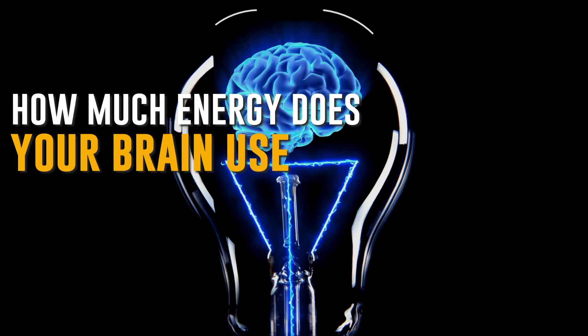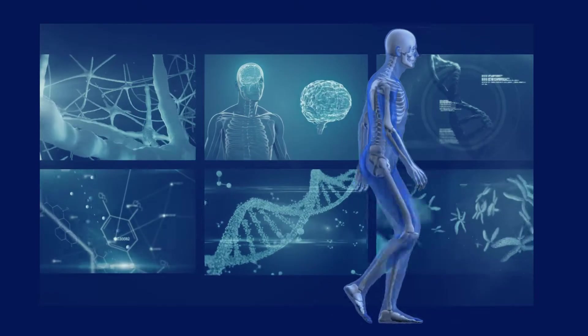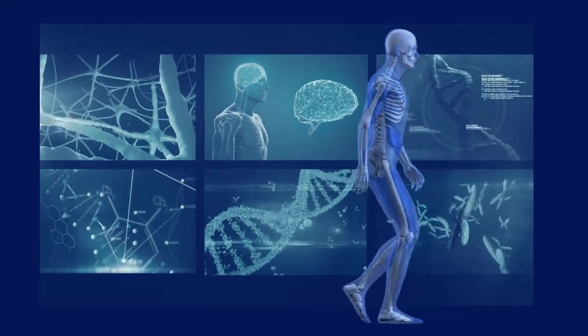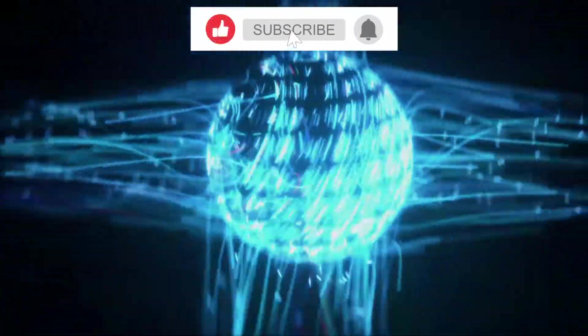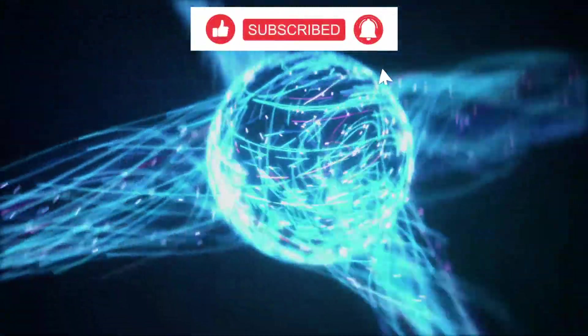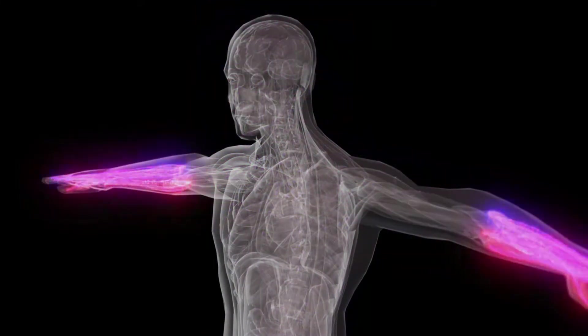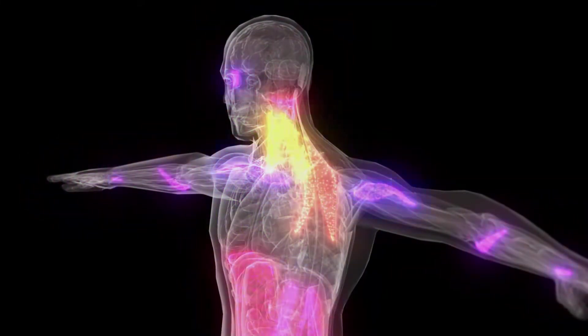How much energy does your brain use? All parts of the body need a certain amount of energy for carrying out important functions. Similarly, the brain also needs a certain amount of energy for operation. When we consider an adult resting, the brain utilizes 20% of the body's energy.